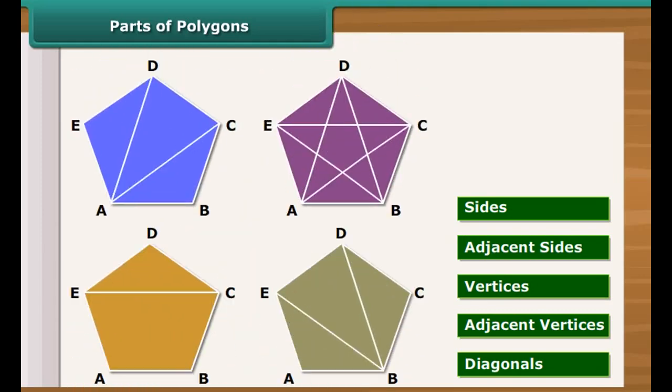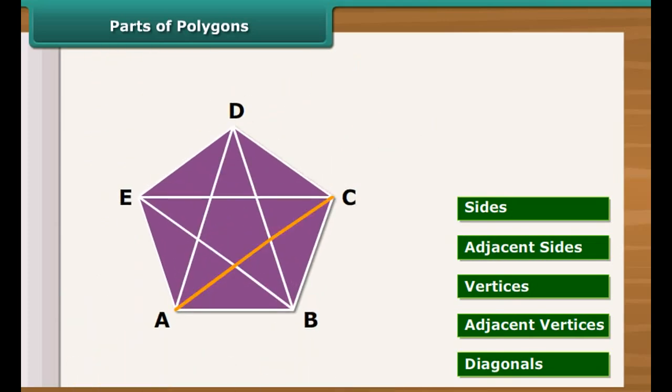Line segment joining non-adjacent vertices are called diagonals of the polygon. For example, AC, AD, BD, BE, CE are diagonals of the given polygon.